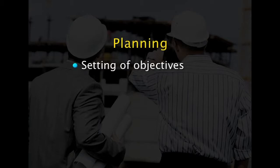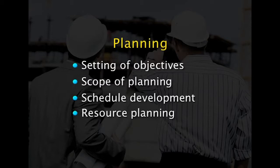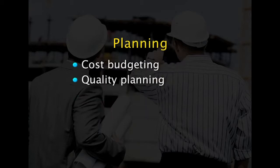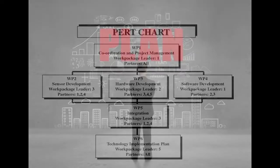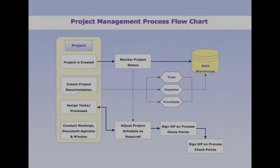Next is planning and designing the project. Planning involves setting objectives, scope of planning, schedule development, resource planning, cost budgeting, quality planning, staff acquisition, and risk identification. All this has to be documented in a baseline plan. Multiple tools and techniques can be used, such as Gantt charts or PERT charts. Using diagrams such as flowcharts, you can design the workflow of a particular project — that is the designing of the project.